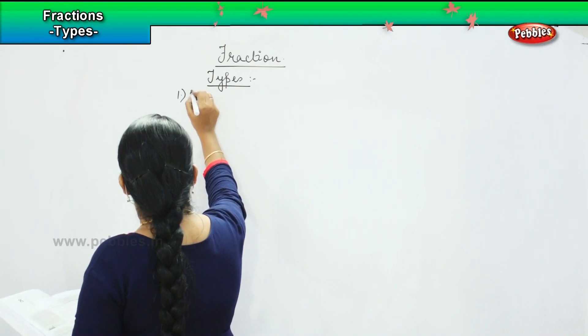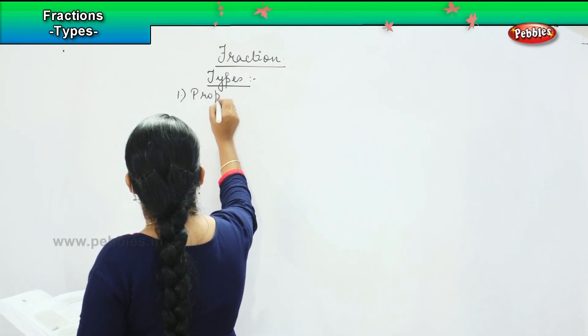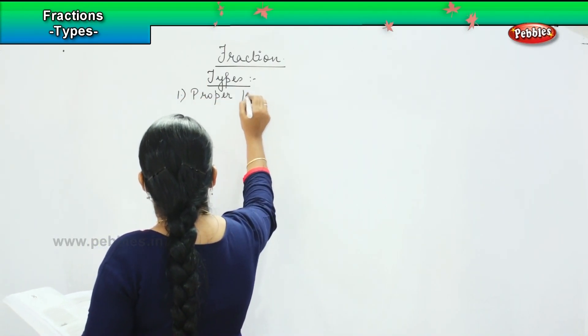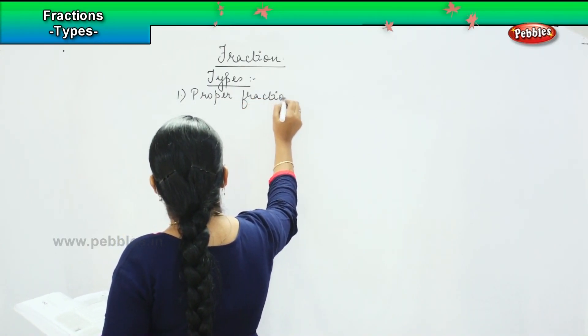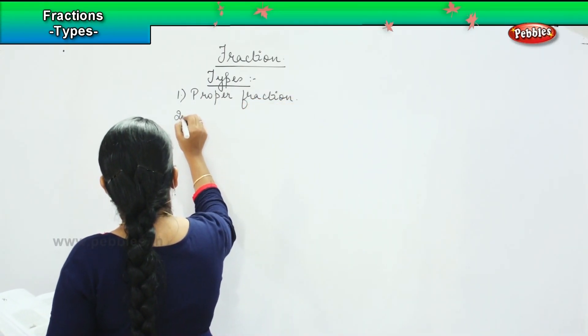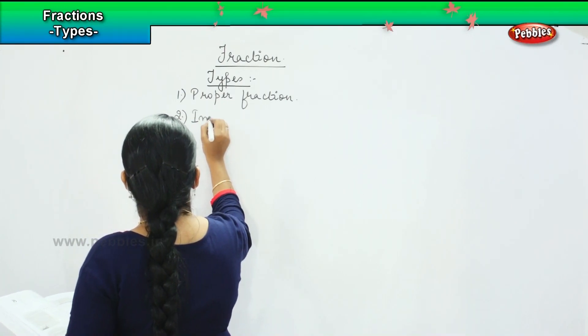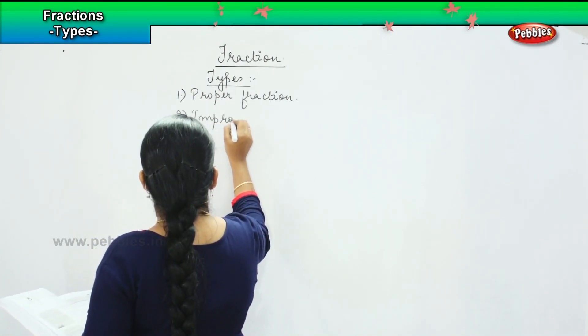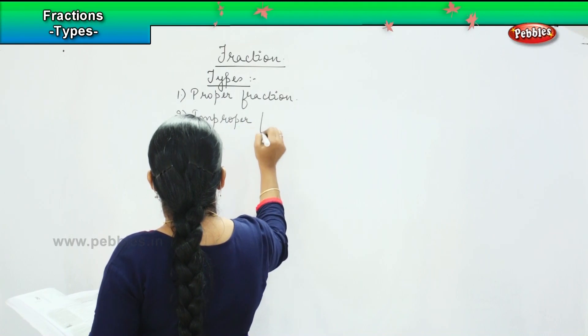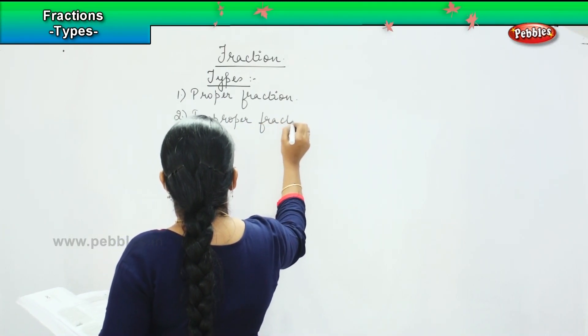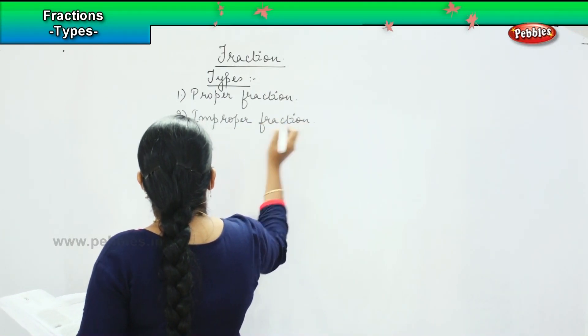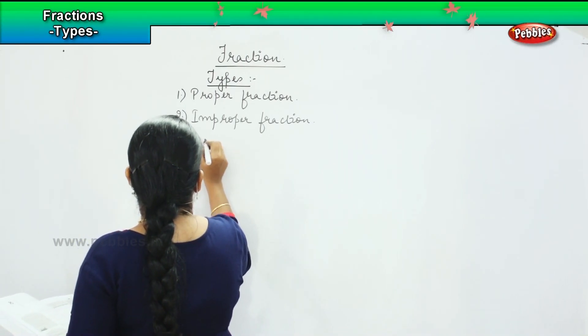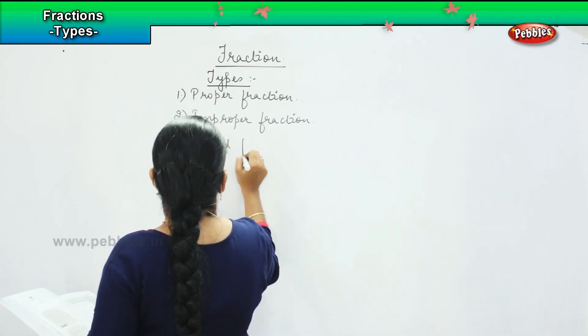The first one is called as a proper fraction. The second one is called as improper fraction. And the third one is called as the mixed fraction.